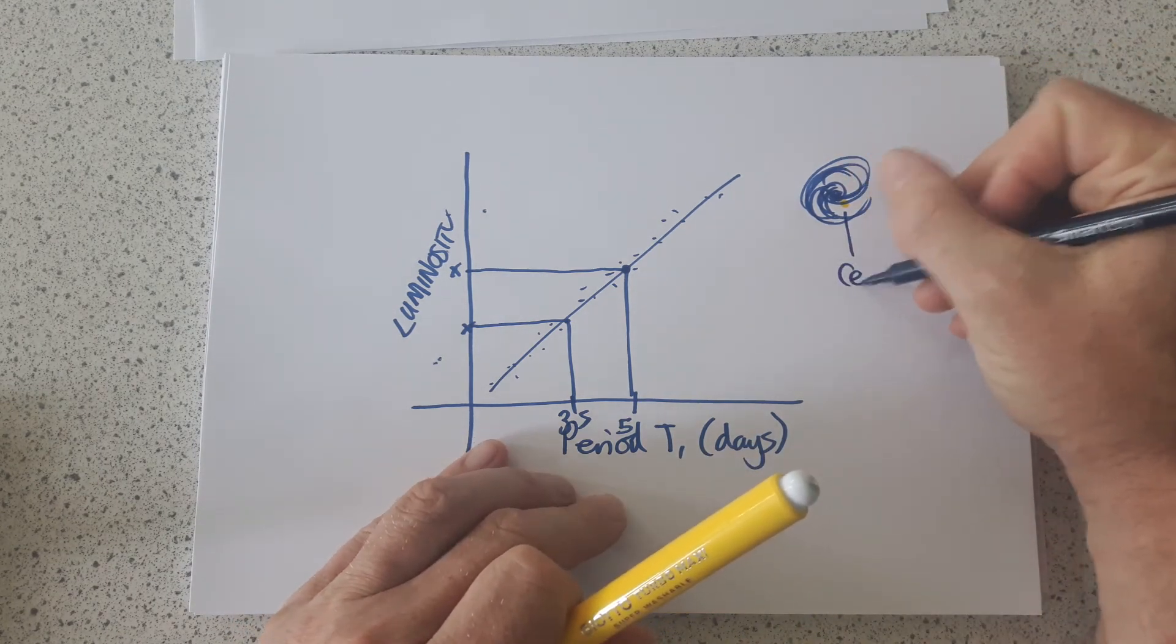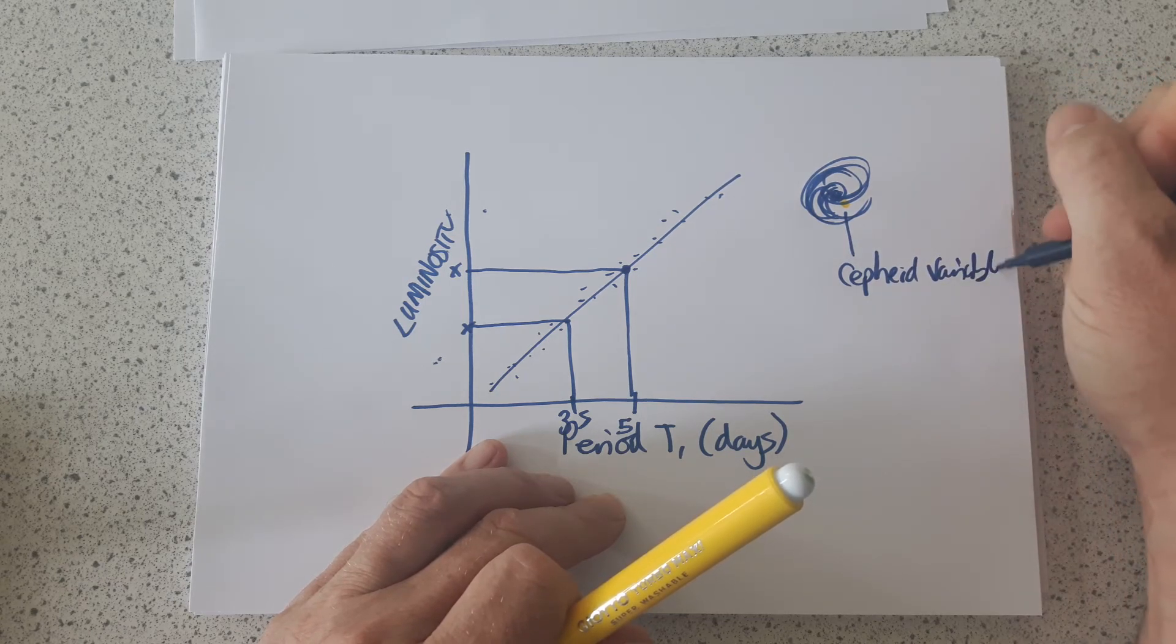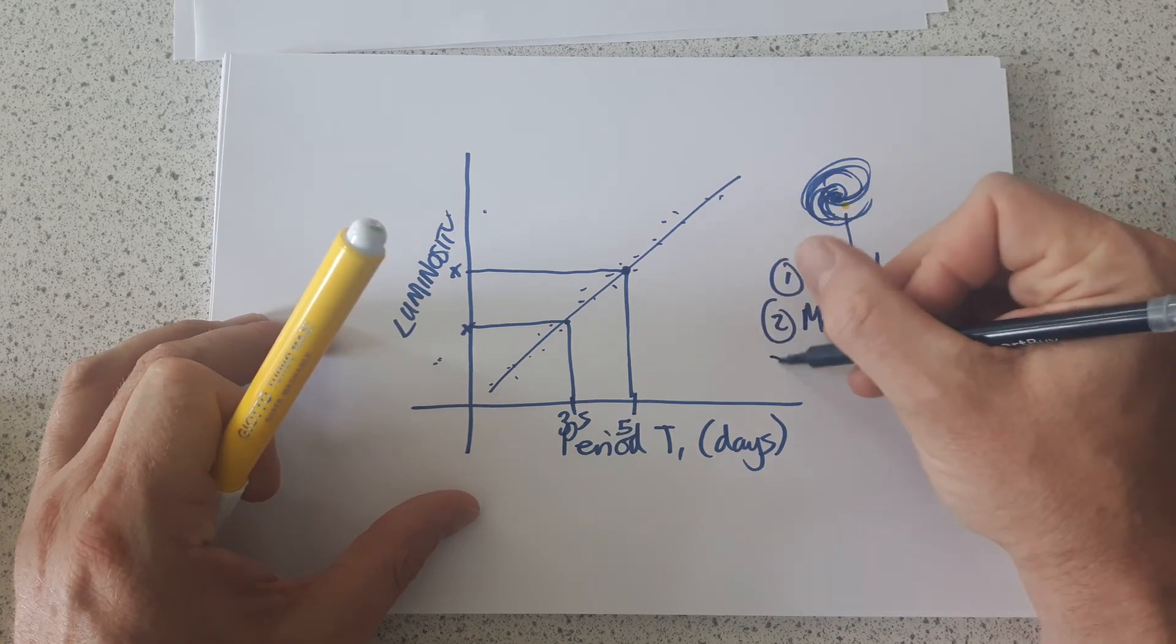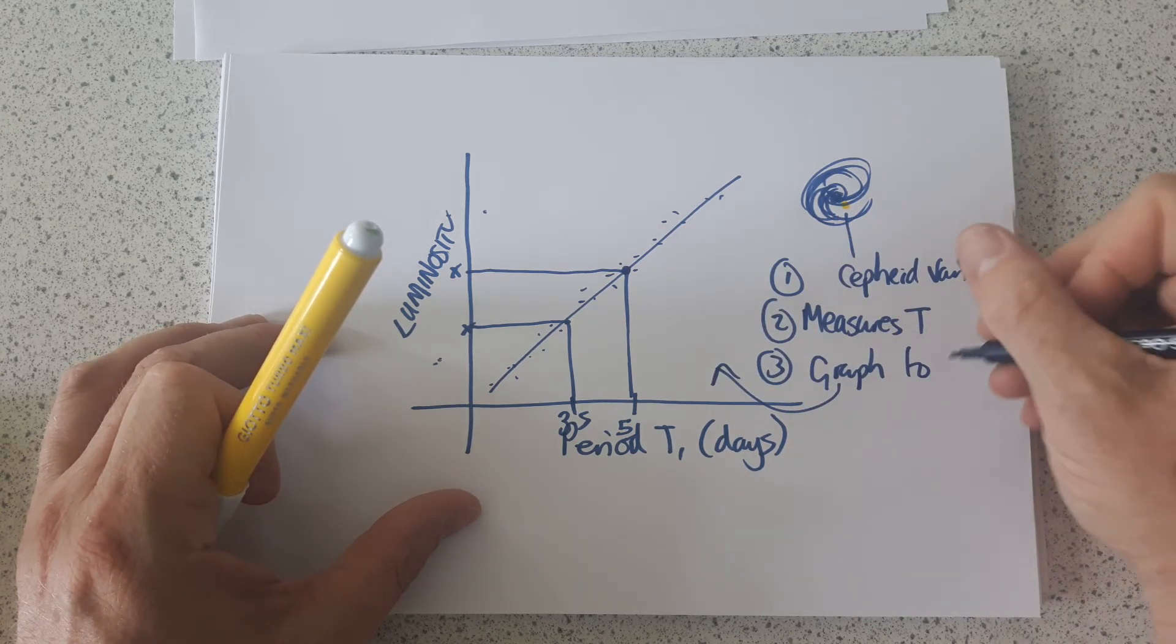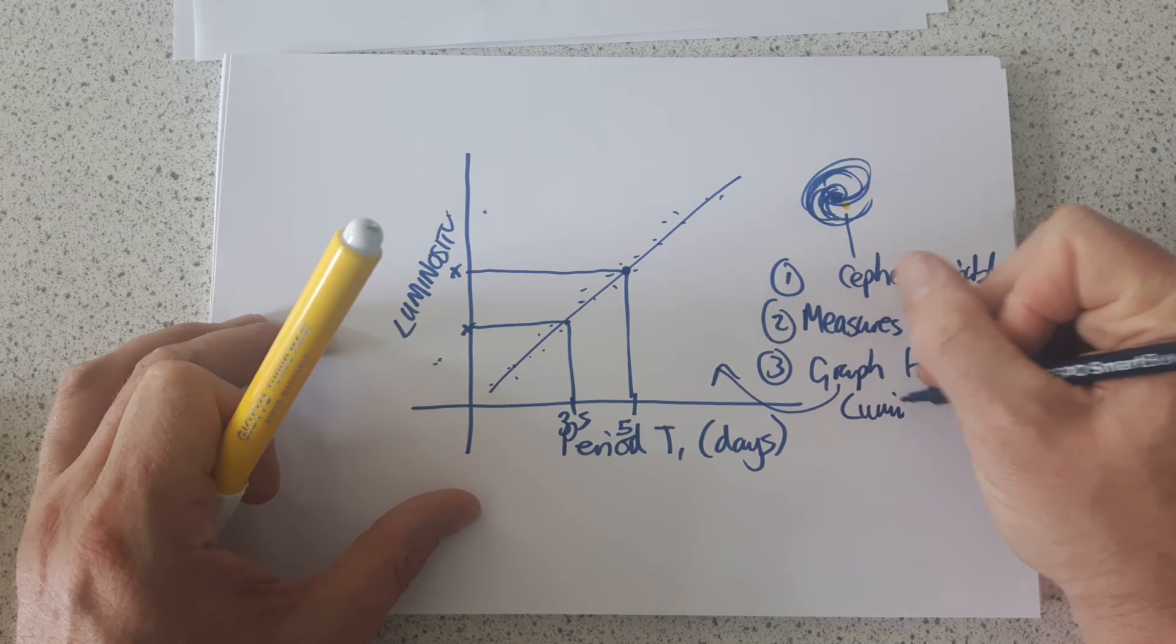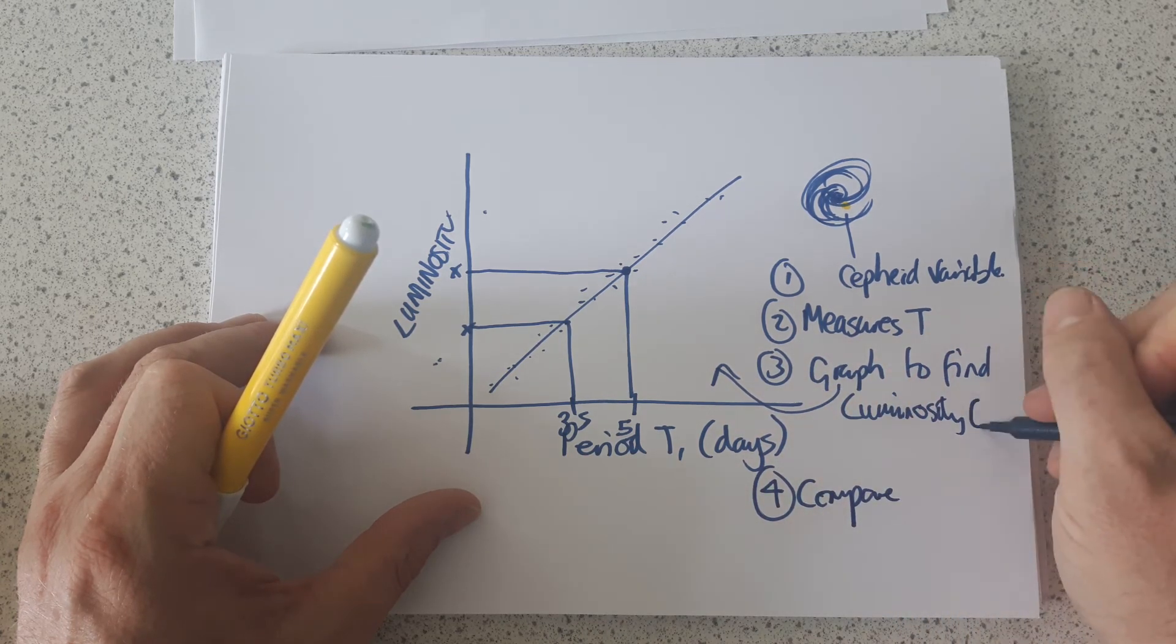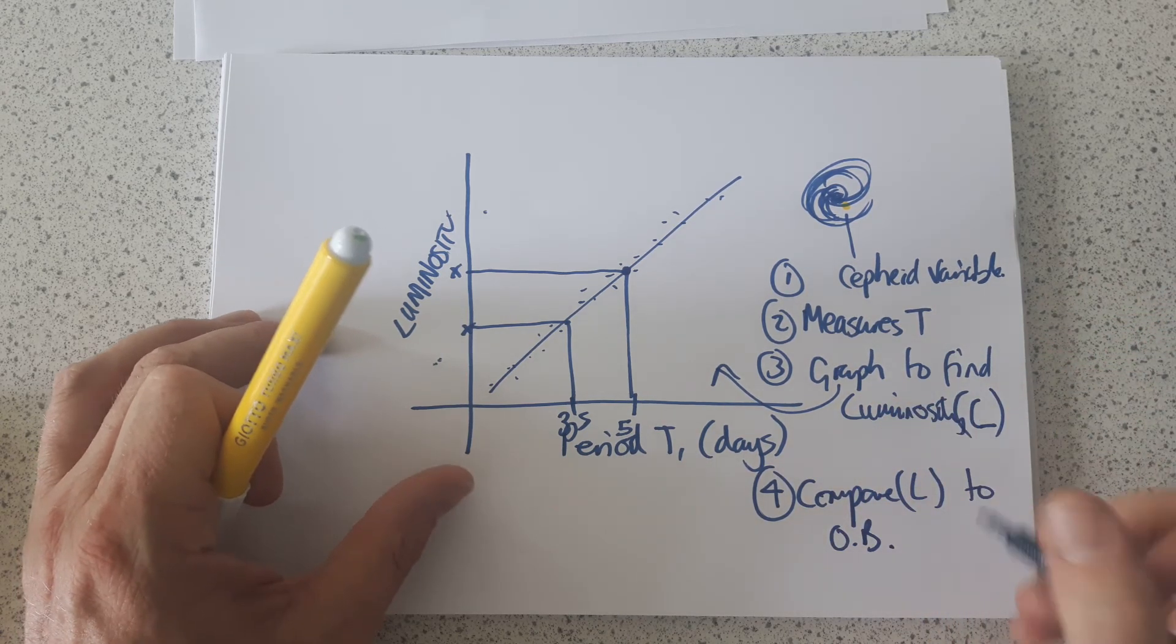So she finds her Cepheid variable. She measures the period of oscillation, T. Then she uses this graph to find the luminosity. And the final step is you compare the luminosity, L, to the observed brightness on Earth.